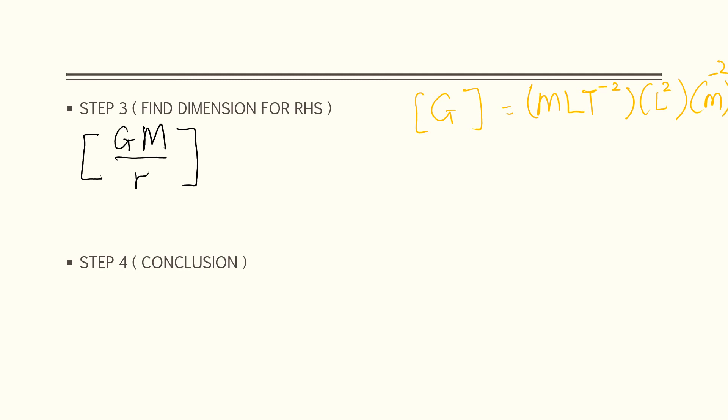I got this from the unit that was given, the unit of G earlier. So we put it here. Where we have M to the negative 1, L to the power of 3, T to the negative 2. Don't forget this M. M is mass, so the dimension is also M over R. R is distance, so dimension is L. So we do the calculation here.